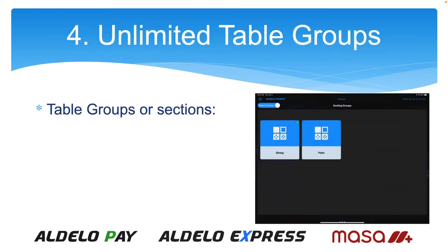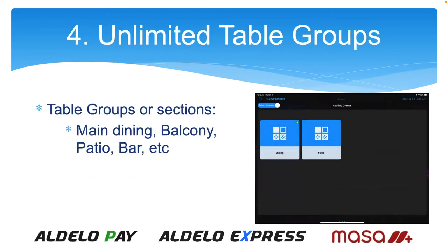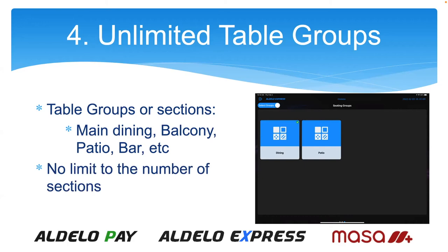Number four is table groups. You can have groups such as main dining, balcony, patio, upstairs dining, downstairs dining, pool dining — whatever group that you think would work best in that operation. You can have those programmed into the system, and there's really no limit to the number of sections. The terminal will default to the group in that section, so it's very easy to have one terminal defaulting to main dining and another to balcony or patio or whatever section they're in.